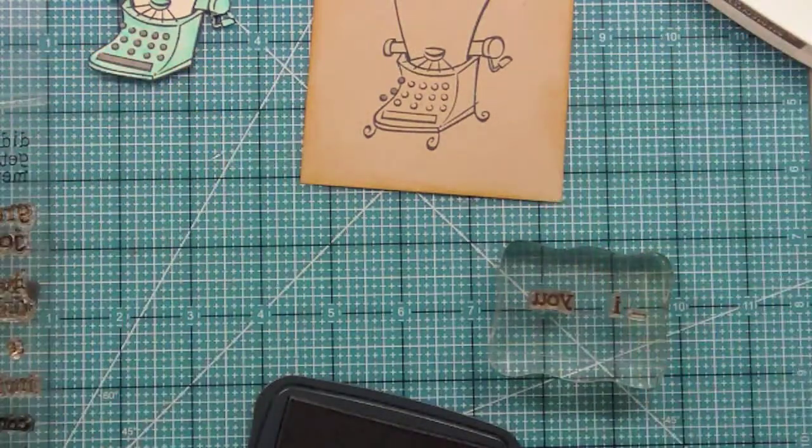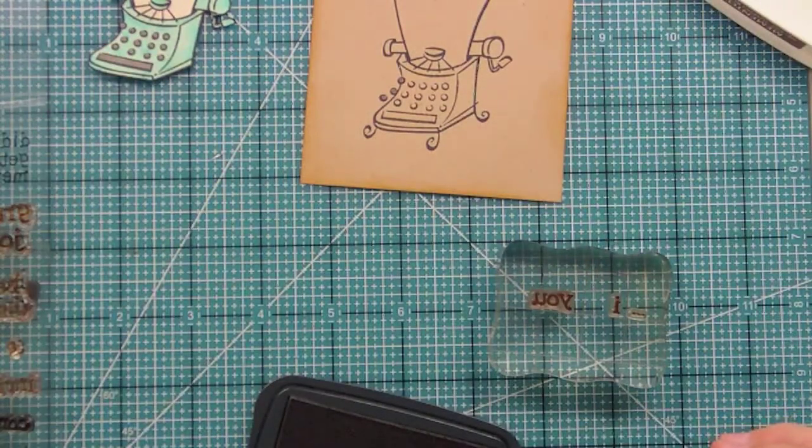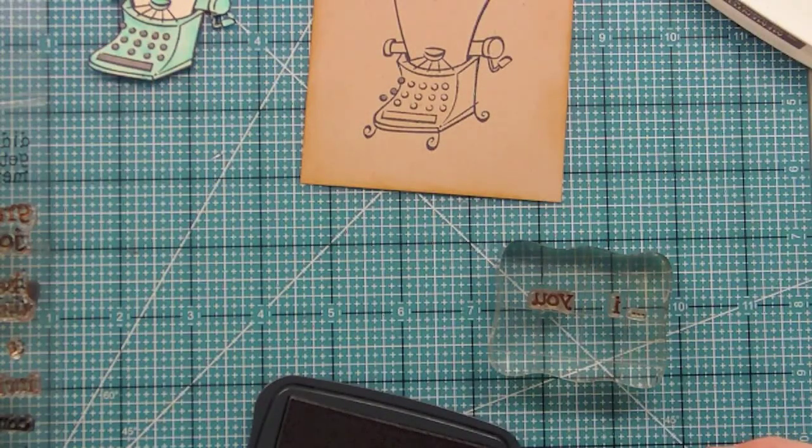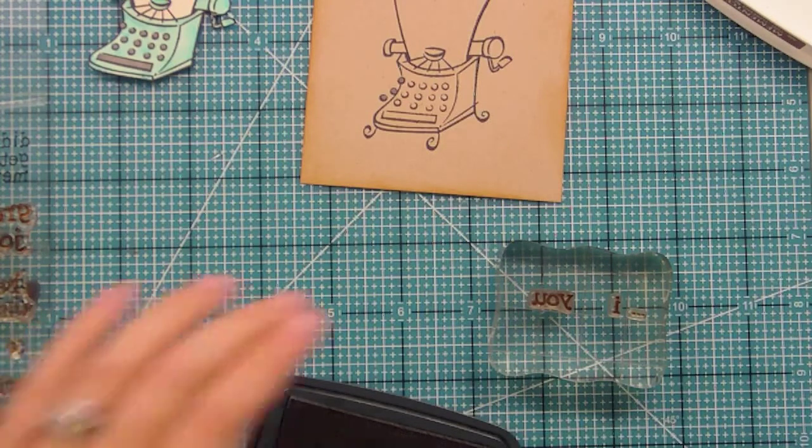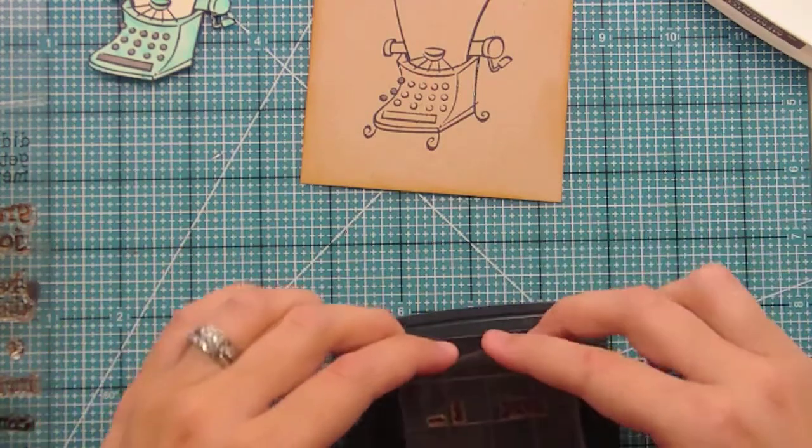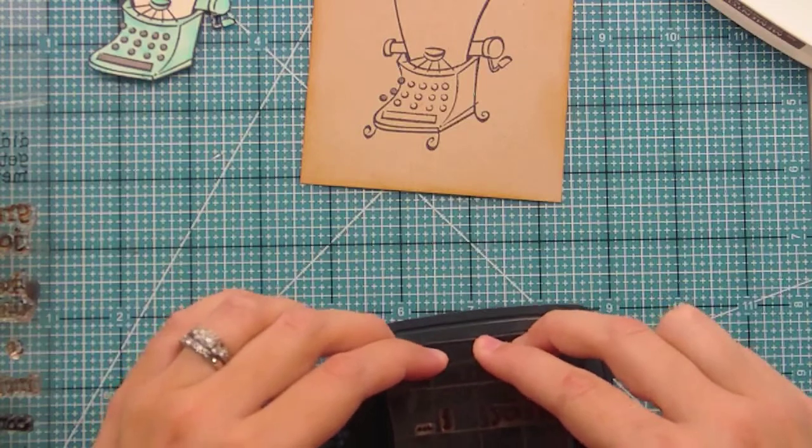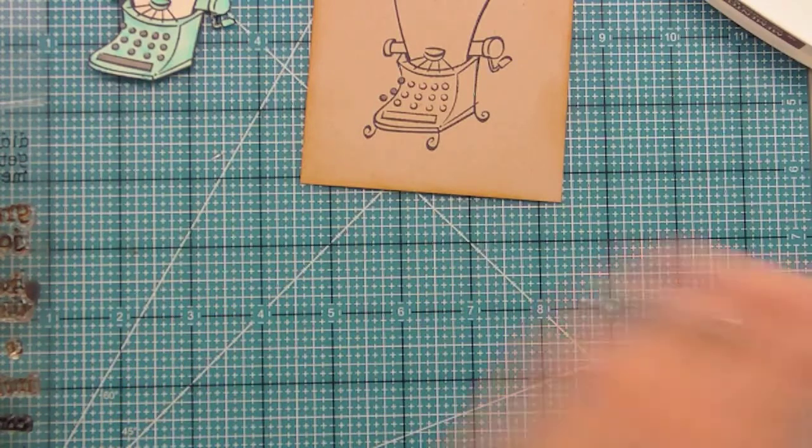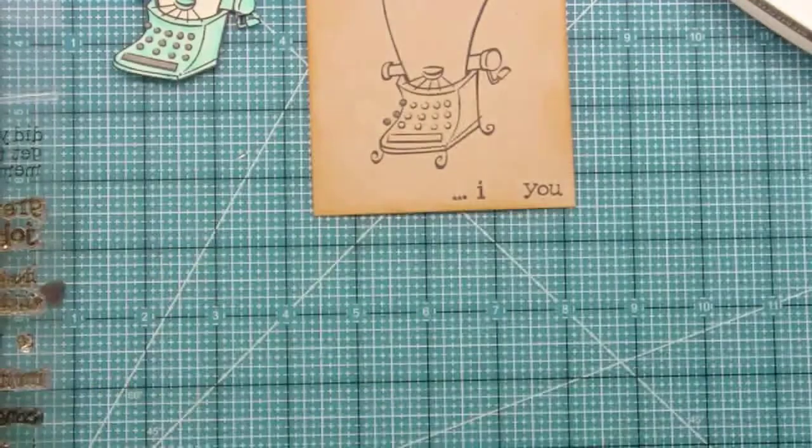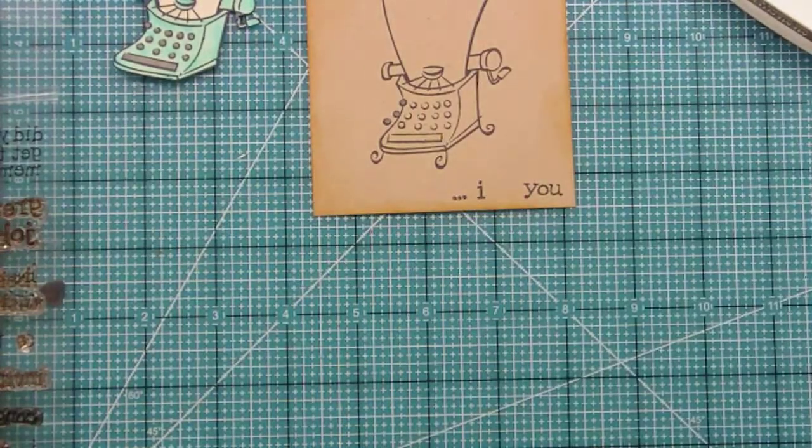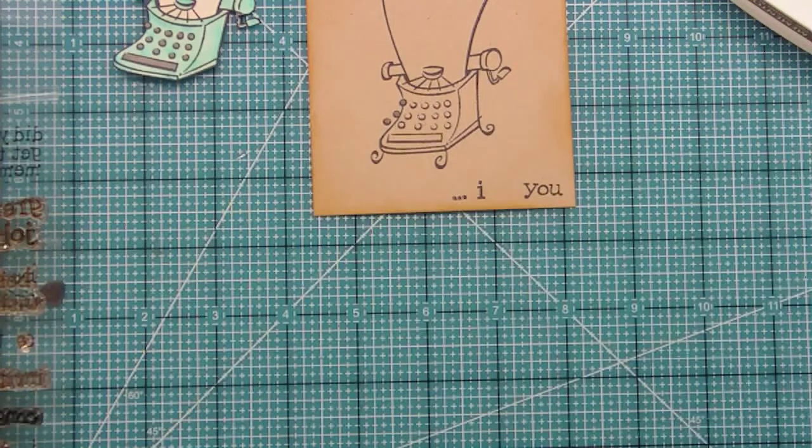And I'm just going to use the Memento ink again so it matches the black ink we've used the whole time. And I'm going to stamp that. A lot of times too, I have my computer next to me and I'm checking email when I make these videos or when I'm making cards. So I'm just stamping the I heart you. And I really had to look over to make sure that it was straight along the edge.